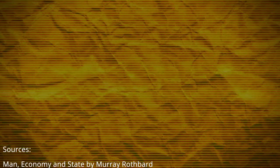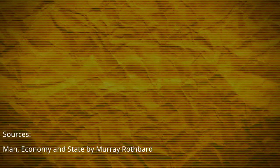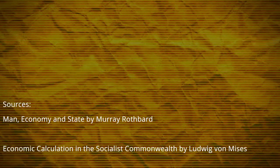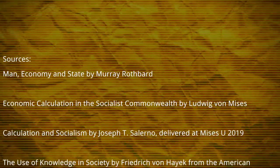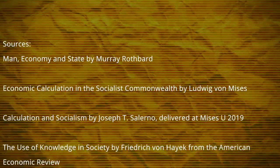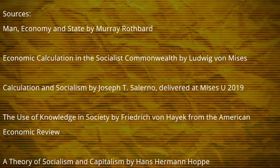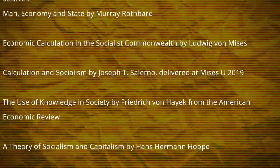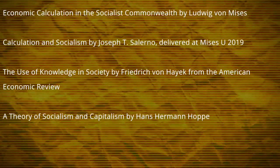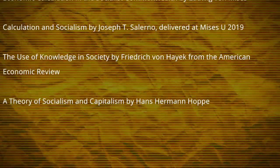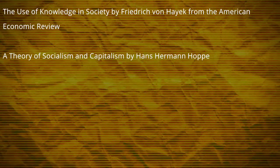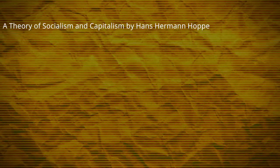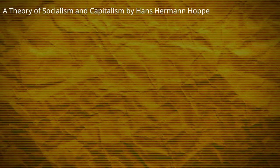Sources for Episode 3: Man, Economy and State by Murray Rothbard. Economic Calculation in the Socialist Commonwealth by Ludwig von Mises. Calculation and Socialism by Joseph T. Salerno, delivered at Mises U 2019. The Use of Knowledge in Society by Friedrich von Hayek, from the American Economic Review. A Theory of Socialism and Capitalism by Hans-Hermann Hoppe.